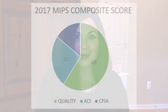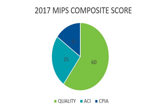60 points can be earned in Quality, 15 points in Improvement Activities, and 25 points in Advancing Care Information. The weights of each category will shift over the course of the program. If one of these categories does not apply to you, it will be dropped from the score and another category will be overweighted to make up the difference.